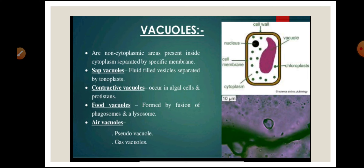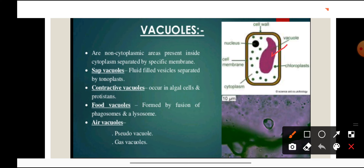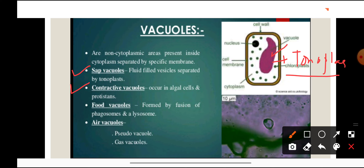The next cell organelle is vacuoles. Vacuoles are non-cytoplasmic areas present inside the cytoplasm, and the membrane of the vacuole is known as the tonoplast. Vacuoles are of different types: sap vacuoles are fluid-filled vacuoles containing water along with nutrients; contractile vacuoles are present in algal cells and protista and play an important role in osmoregulation — maintaining the balance of water and salt within the organism; food vacuoles; and air vacuoles, which are filled with air and help organisms float over the surface of water.